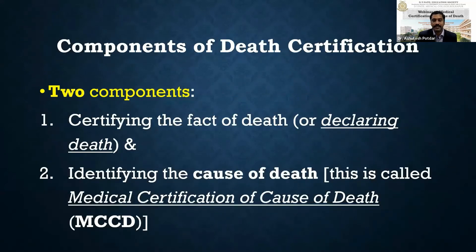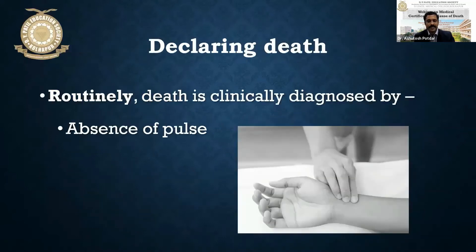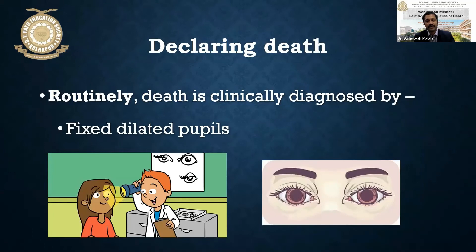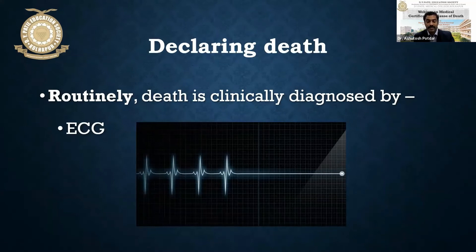The death certification has two main components. First is certifying the fact of death — that is, declaring death. The second part is identifying the cause of death, which is called medical certification of cause of death. Declaring death is usually done by checking for the pulse, with absence of pulse. With help of a stethoscope, we check for respiration and heartbeats. We check for pupillary reflex with help of a torch — fixed dilated pupils indicate death. And if we check ECG, a flat line is observed. In this way death can be declared.